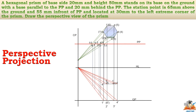Join all the intersection points and you will get a hexagonal shape, similarly on the bottom. We can thus get the perspective view of the prism. This is the procedure to draw the perspective projection of a prism.